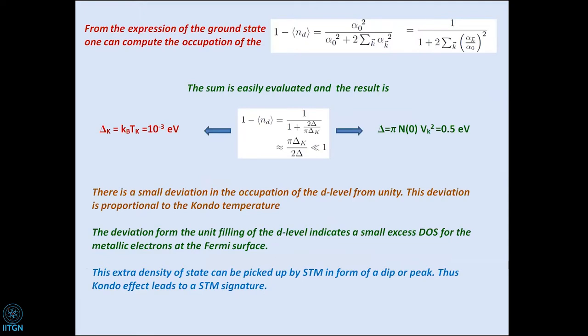Regarding the question about locality: if you directly have a magnetic impurity on top of conduction electrons, you are done. The Anderson model was motivated by materials having d-electron orbitals alongside a conduction band, where the question is whether Kondo-type physics emerges. The variational calculation provides a nice explanation for the screening.